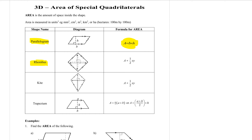The next shape we have is a rhombus. A rhombus is basically like a square that is usually pushed over a little bit — the angles aren't right angles. The formula that we have involves the diagonals of the rhombus.